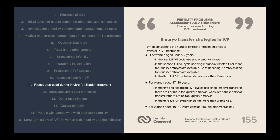Embryo transfer strategies in IVF differ by age group. For women aged under 37 years in the first full IVF cycle, use single embryo transfer. In the second full IVF cycle, use single embryo transfer if one or more top-quality embryos are available, or consider two embryos if no top-quality embryos are available. In the third full IVF cycle, transfer no more than two embryos. For women aged 37 to 39, use single embryo transfer in the first and second cycles if top-quality embryos are available, consider double embryo transfer if no top-quality embryos are available, and transfer no more than two in the third cycle.